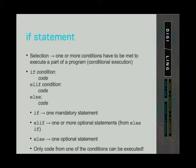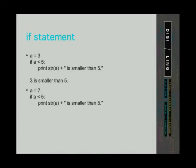Let's take a look at some examples. The shortest if statement has one if statement containing one line of code. For example, we can check if 3 is smaller than 5. If this condition is met, we will print '3 is smaller than 5'. We can also have an if statement with a condition that has not been met, and then nothing happens, like in the second example.